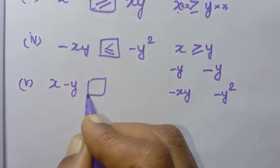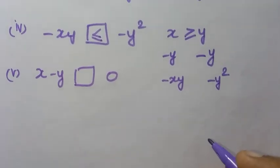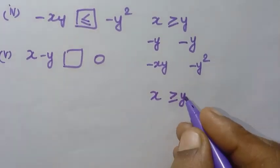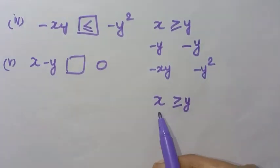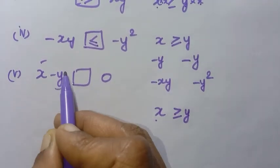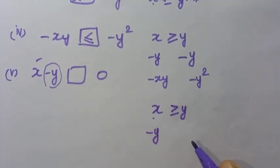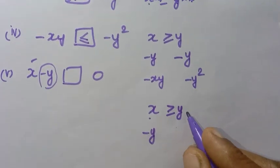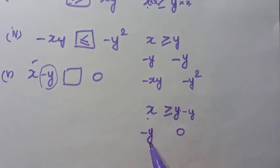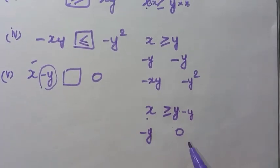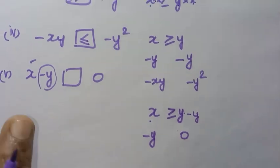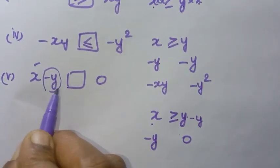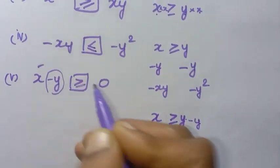5th sum: x minus y box 0. Given x is greater than or equal to y. We can write x is greater than or equal to y, which means x minus y is greater than or equal to 0. By subtracting y from both sides — this is a subtraction of the same number — the symbol does not change. So x minus y is greater than or equal to 0.